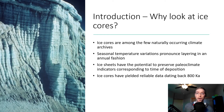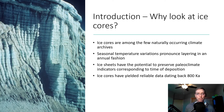So why do we look at ice cores? Ice cores are among the few naturally occurring climate archives. Seasonal temperature variations are exhibited as pronounced layering in an annual fashion — you can see it almost looks like horizontal bars in the ice wall to our left. You can see these depositional layers recording annual cycles of precipitation.